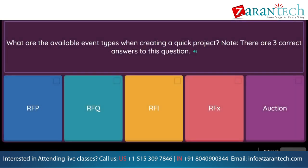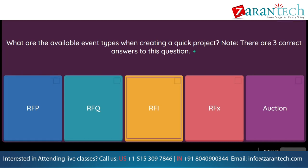Question: What are the available event types when creating a quick project? Note, there are 3 correct answers to this question. Option 1: RFP. Option 2: RFQ. Option 3: RFI. Option 4: RFX. Option 5: auction.